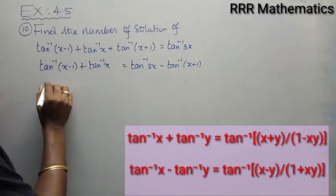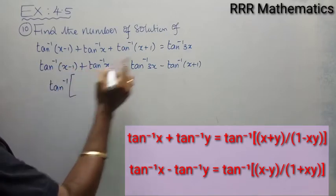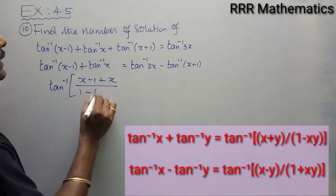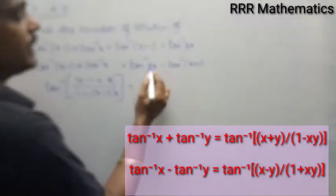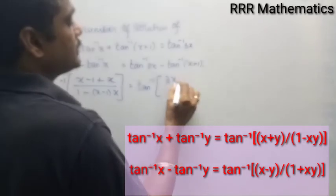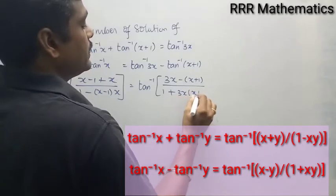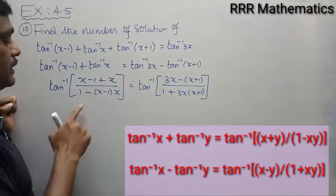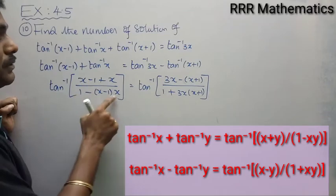On the left side, we have the form tan inverse x plus tan inverse y. Using the identity, this becomes tan inverse of (x plus y) divided by (1 minus x times y). So I write tan inverse of (x minus 1 plus x) divided by (1 minus (x minus 1) times x), which simplifies to tan inverse of (2x minus 1) divided by (1 minus x squared plus x).